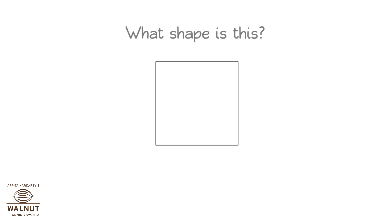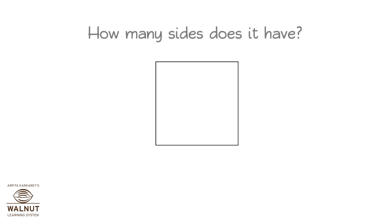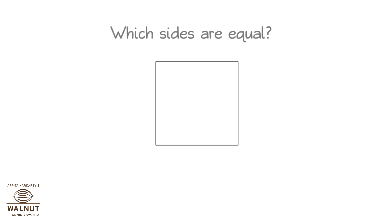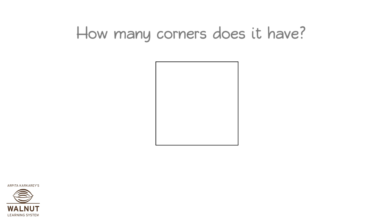What shape is this? Square. How many sides does it have? Four. How many corners does it have? Four. Which sides are equal? All four sides. How many corners does it have? Four.